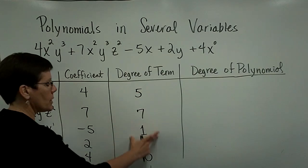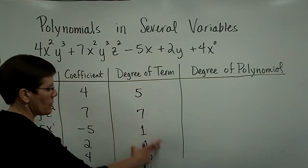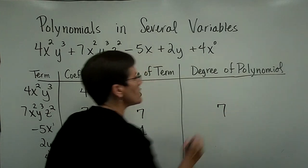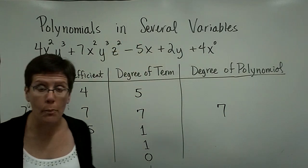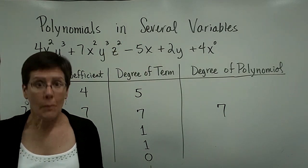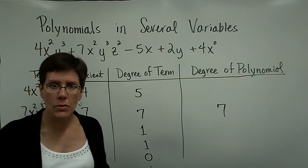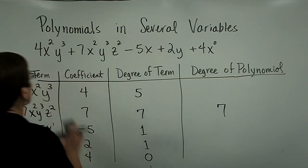The degree of the polynomial is the highest of any one of these. So since 7 is the highest, the degree of this overall polynomial is 7. Let's now add and subtract polynomials that have several variables.